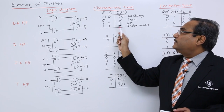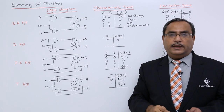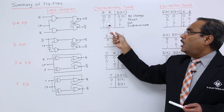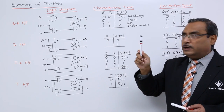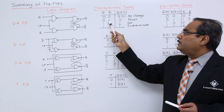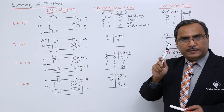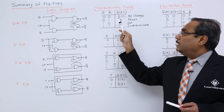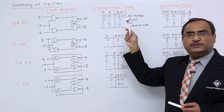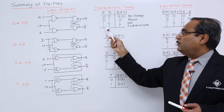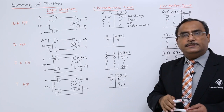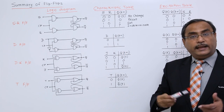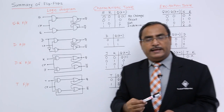This is the characteristic table of the SR flip-flop. When the set is enabled, output will be set — that means 1. When reset is enabled, output will be reset — that means 0. When set and reset, neither one of them is enabled, there will be no change; previous output will be the present output. And whenever we are having 1,1 — that is the indeterminate condition, also known as the rest condition — and that is the main problem with the SR flip-flop.